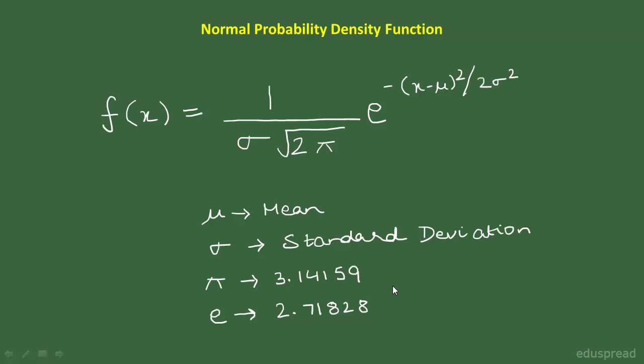The probability density function of a normal distribution is this. Here μ is equal to mean. This symbol is called sigma, and we use this symbol to denote standard deviation.